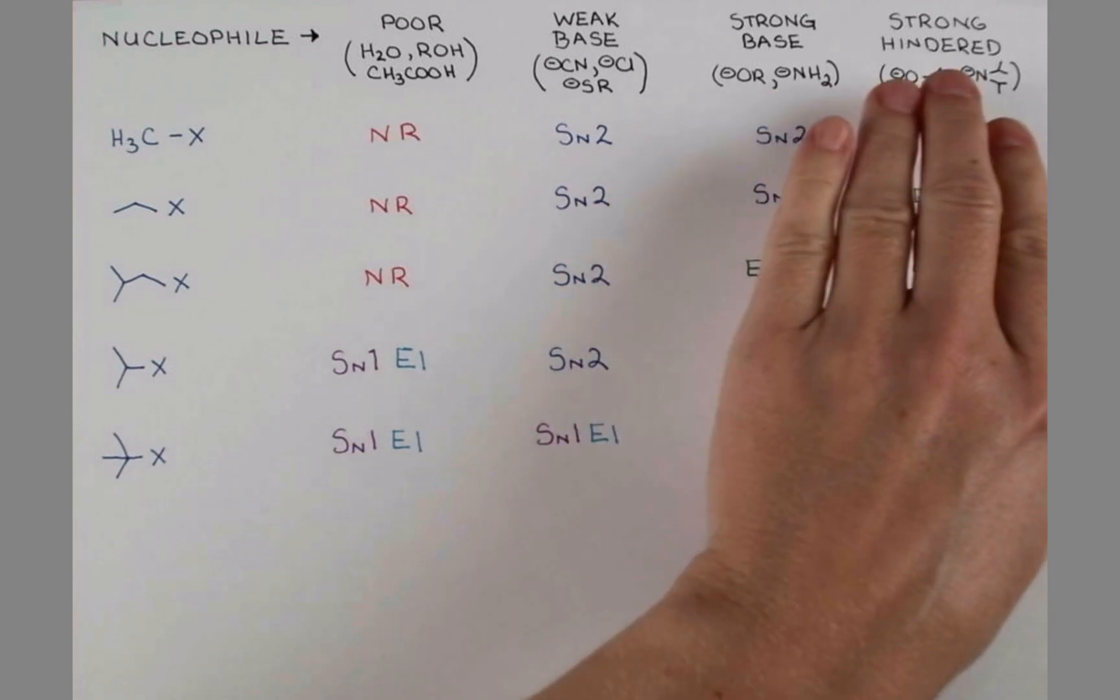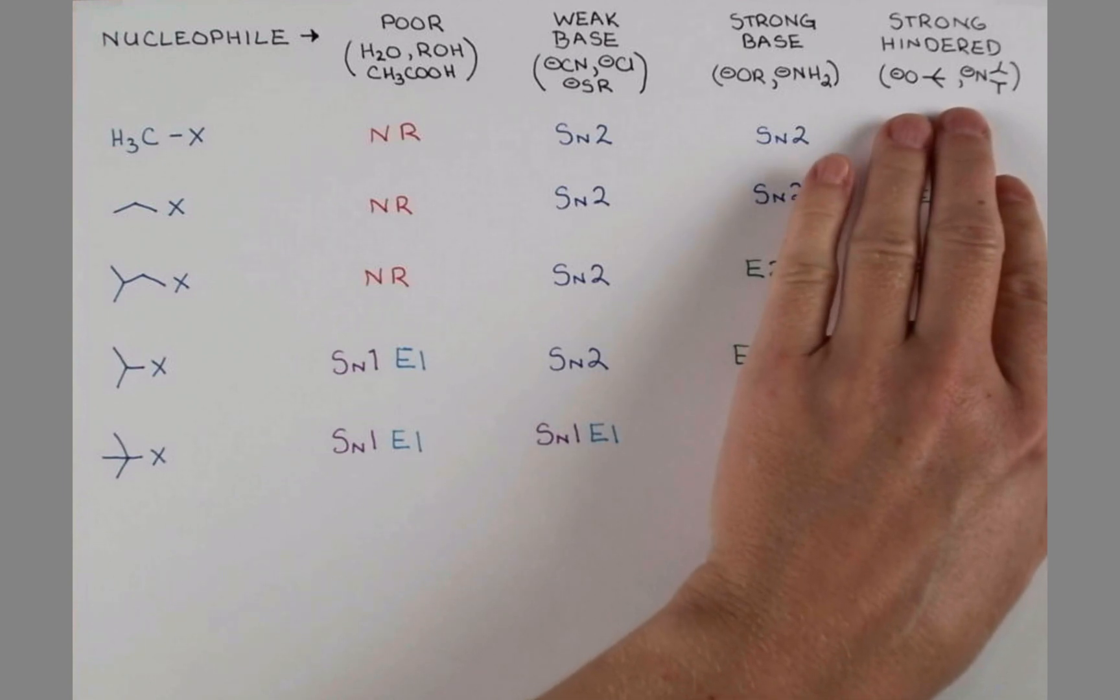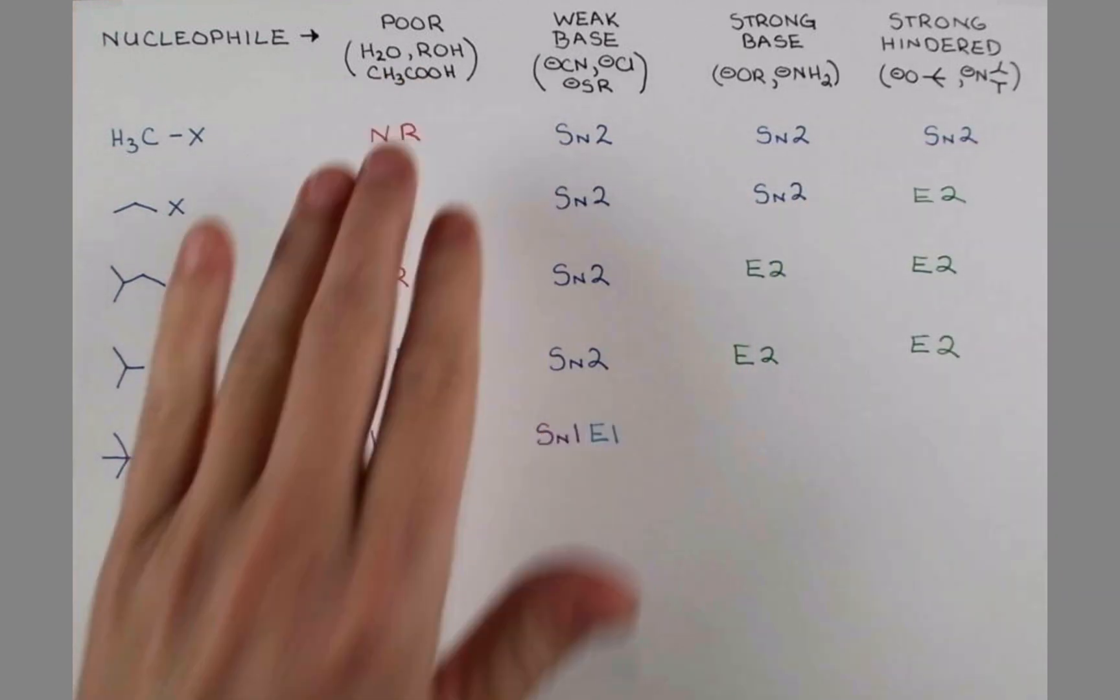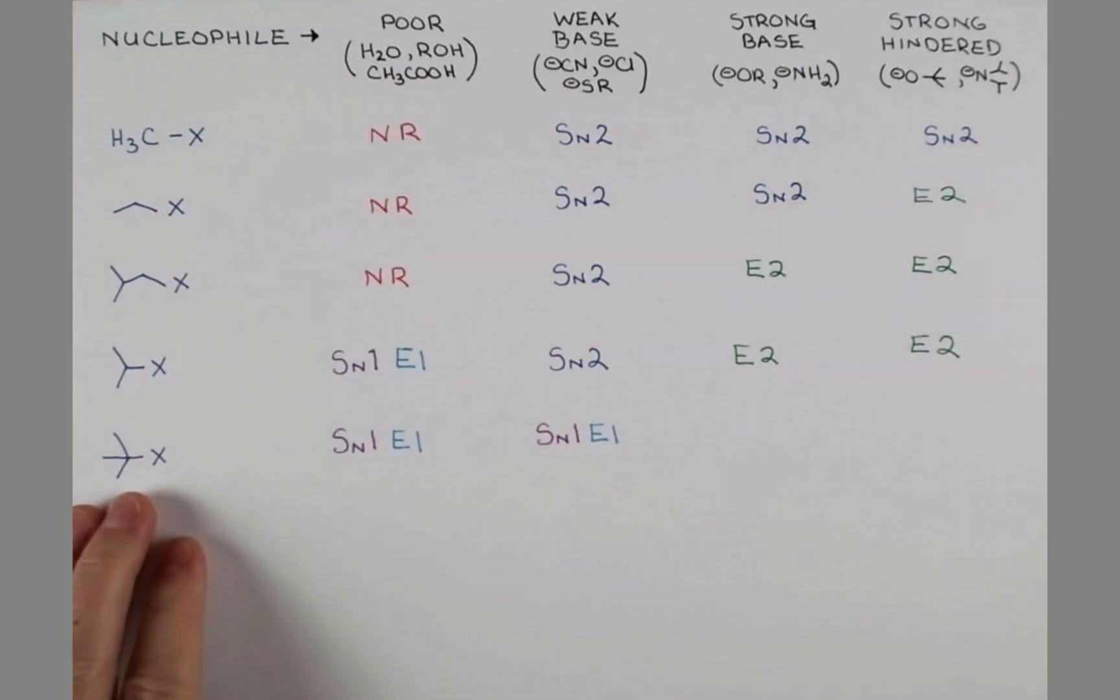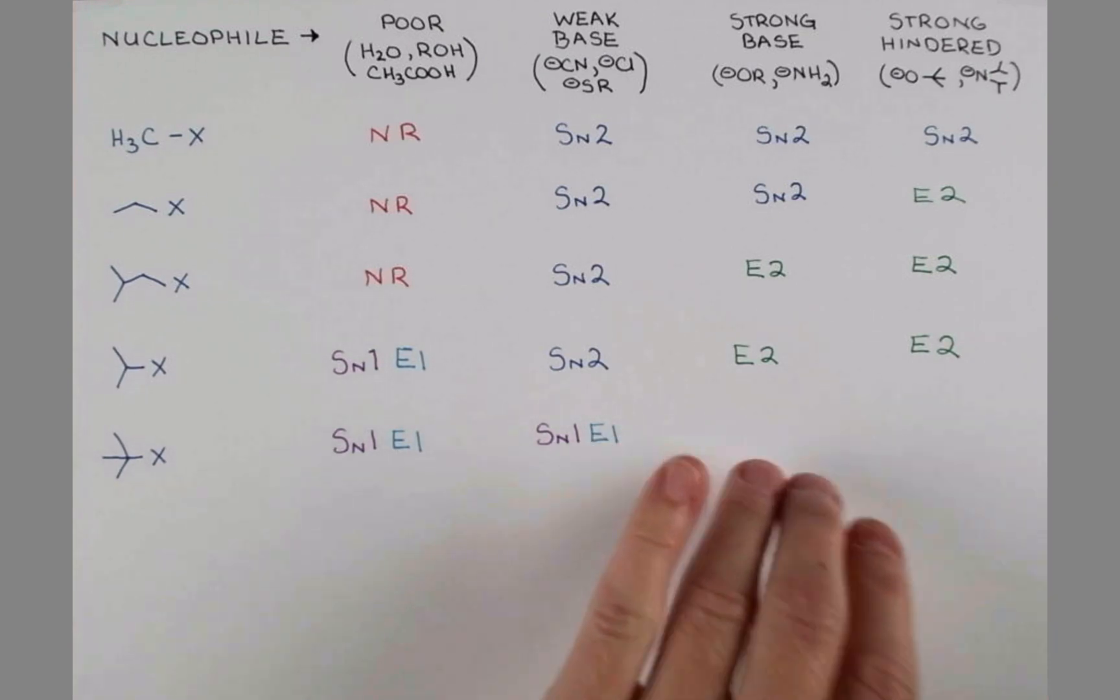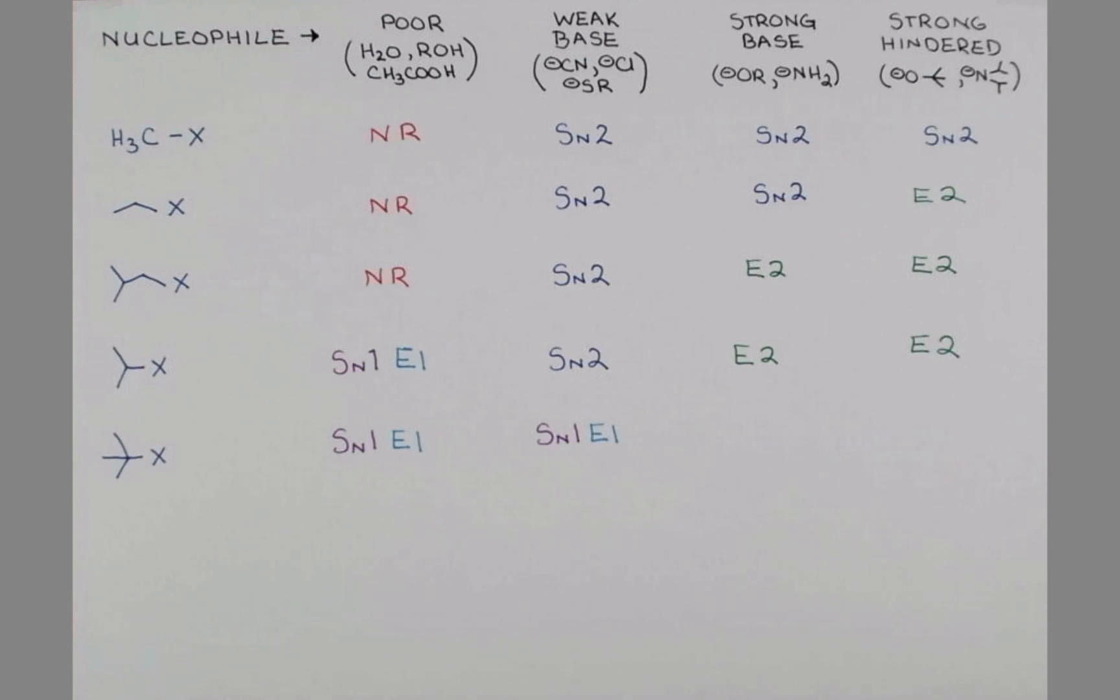Again, the strong base and strong hindered base situations don't provide the polar protic environment that we need for this compound to ionize. And so, each of these situations is going to promote elimination again by the E2 mechanism.